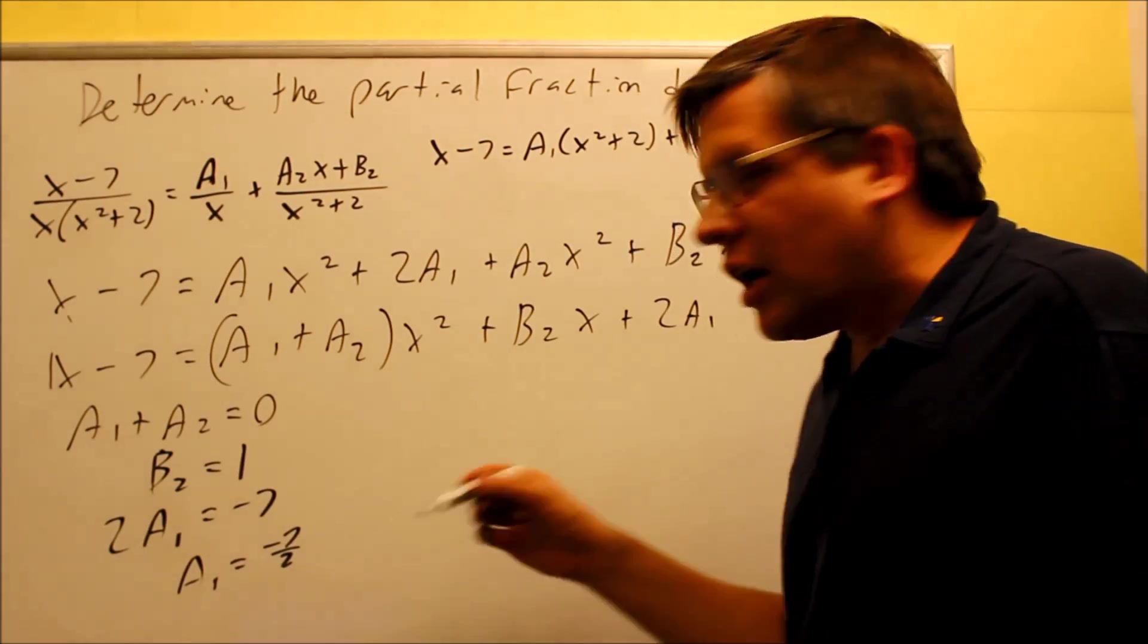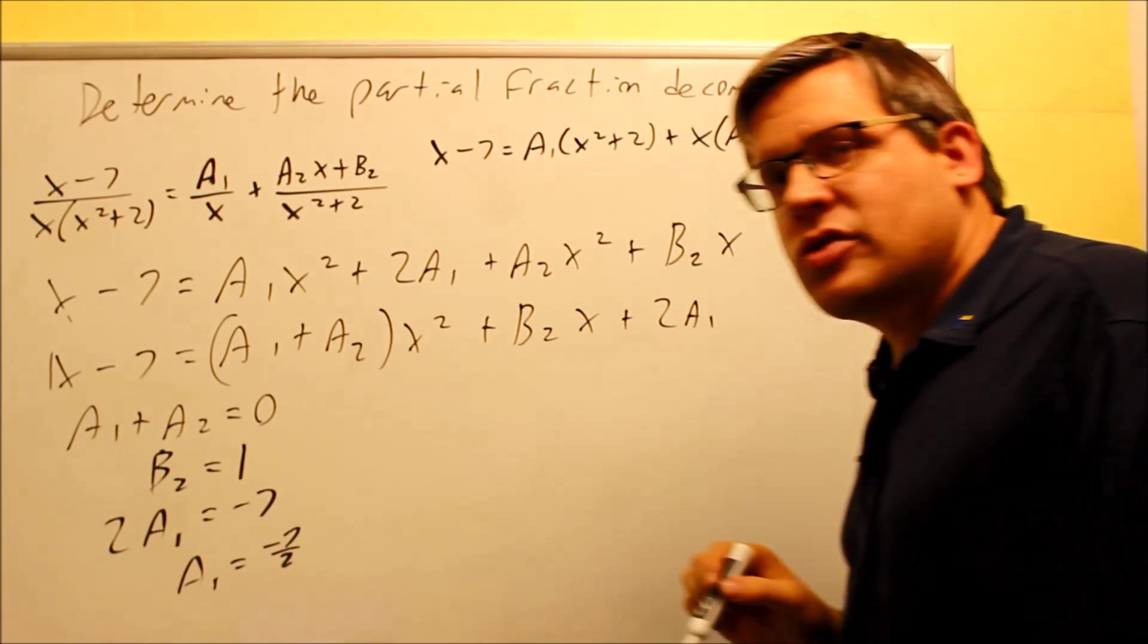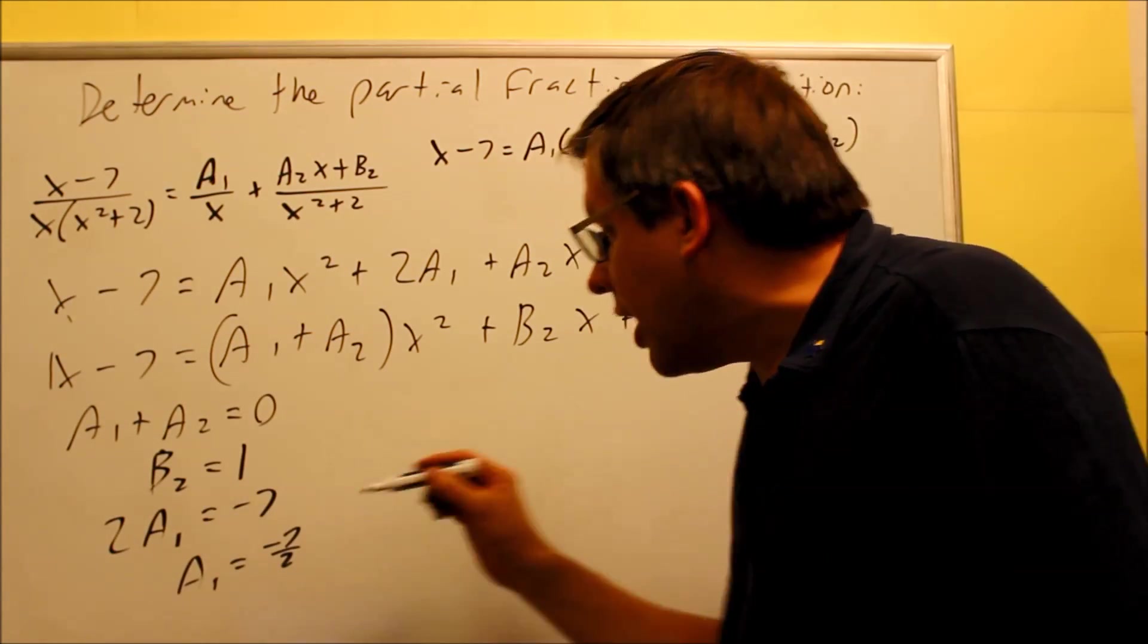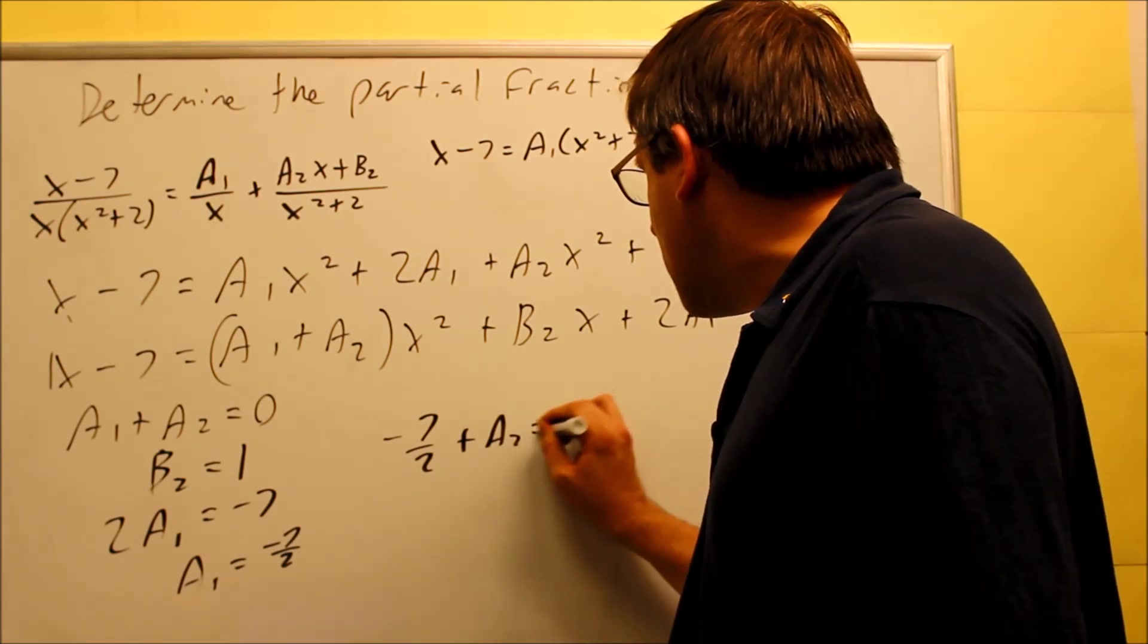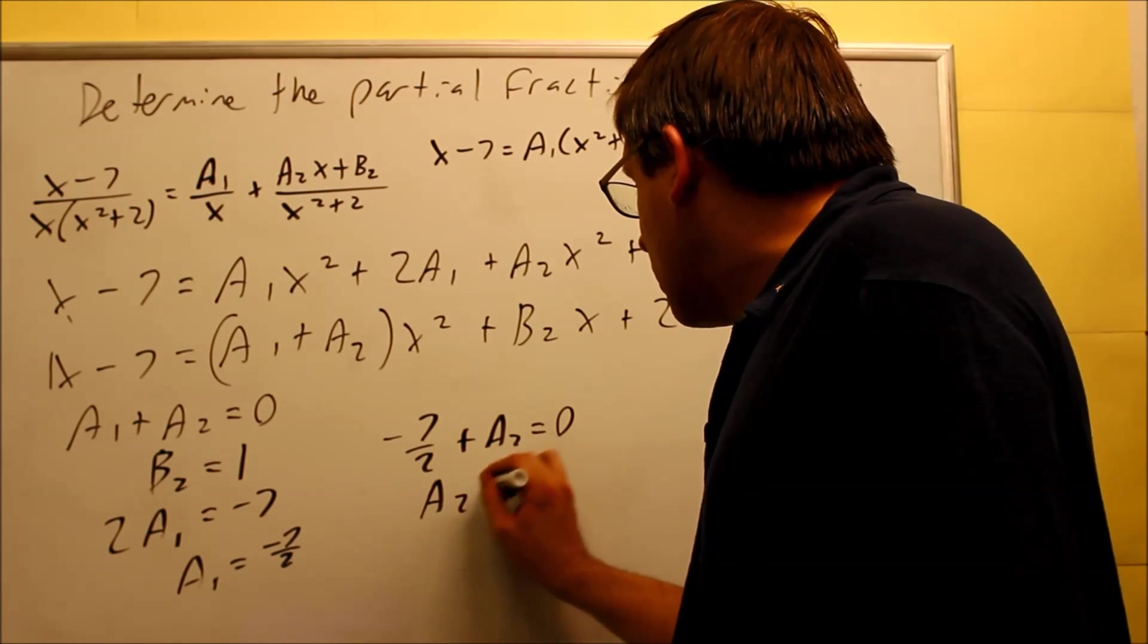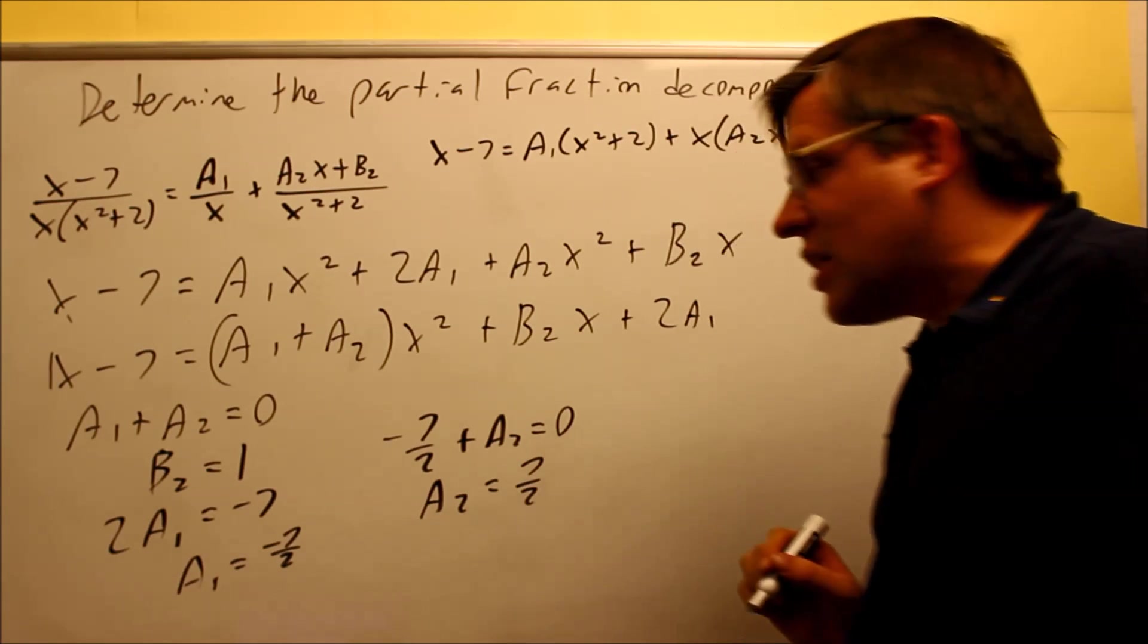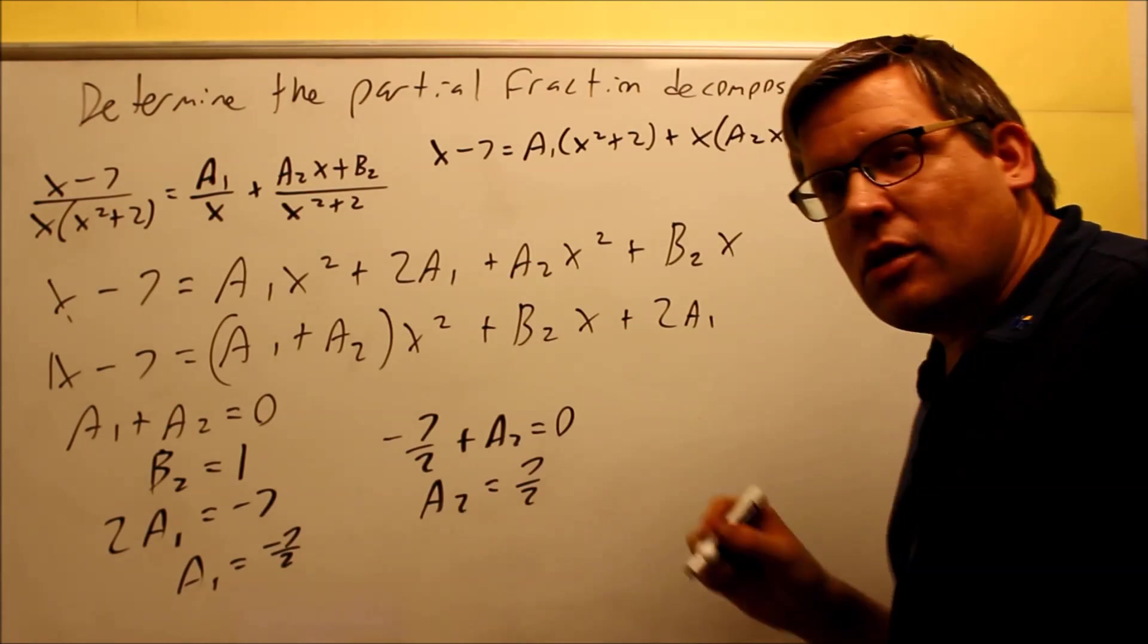So, now, we already know two out of the three values. Since we know this one, this equation a1 plus a2 equals 0, well, we already know a1 has got to be negative 7 halves. So, negative 7 halves plus a2 equals 0. That means that if I bring that over, a2 is going to have to be positive 7 halves. So, now, we know all three values, a1, a2, and b2.